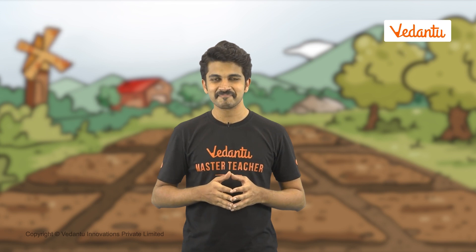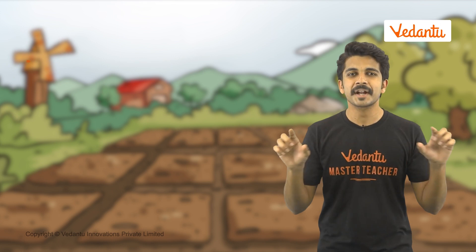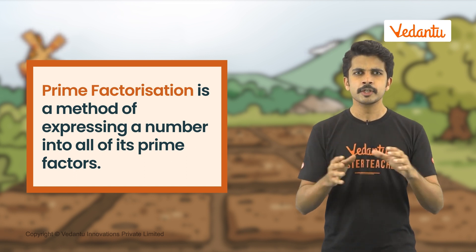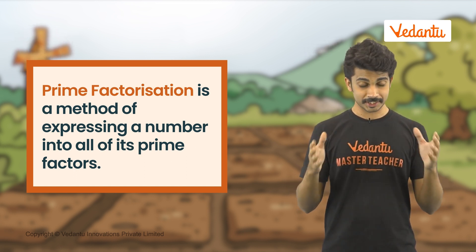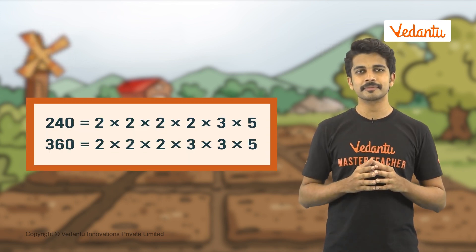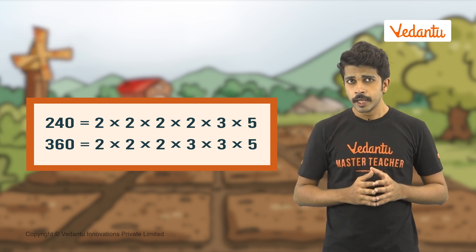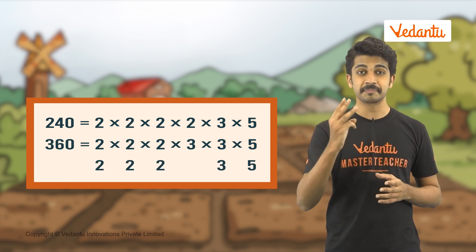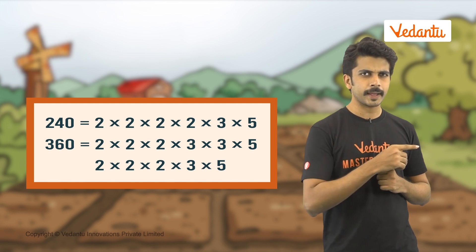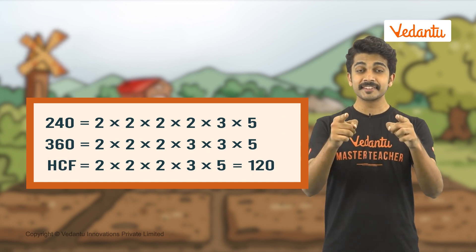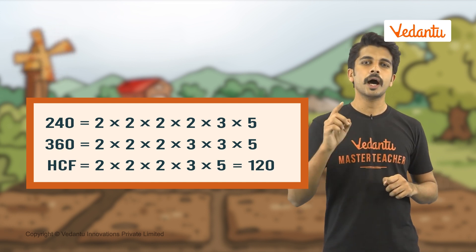Don't worry, we have an easy way to find the HCF. The HCF of two numbers can be calculated using prime factorization. Prime factorization is a method of expressing a number into all of its prime factors. The steps are: Step 1 — write the prime factors of the given numbers. Step 2 — select all common factors. Step 3 — multiply all common factors, and voila! We will get our HCF. The HCF of these two numbers is 120.